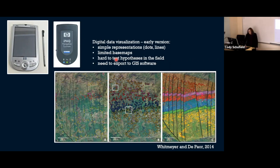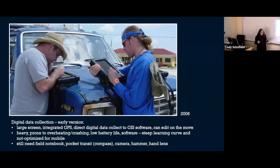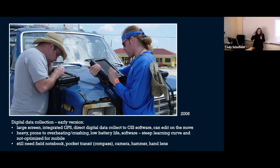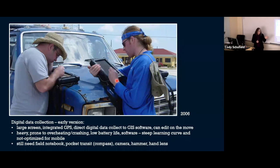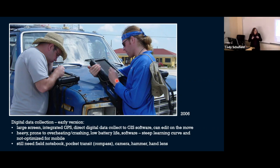We were collecting the data twice — still using paper-based maps and putting symbols on them while also collecting digital data — so it was hard to do continuous hypothesis testing, and you still needed to export to GIS software. The next step was buying Explorer tablet PCs. A larger screen was great; you could collect data right into GIS software with some symbology and edit on the go. But these things were heavy, would overheat or get too cold, were prone to crashing, and battery life was a problem. The software — ArcMap or ArcDesk as it was called — had a steep learning curve and was not optimized for mobile data collection.